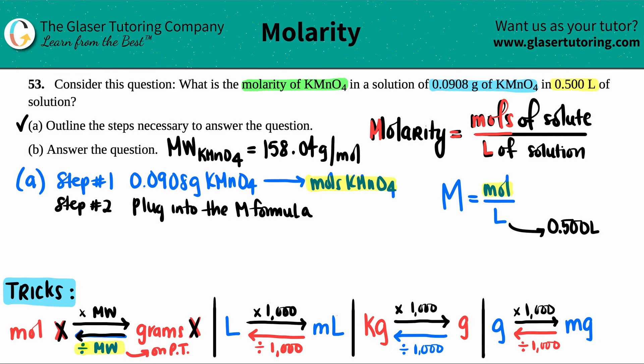So now what did we say? In order to get the moles, I have to take the grams that I have and just divide by the molecular weight. So we'll do letter B over here. Letter B, I take the grams, 0.0908, and I divide by the molar mass, 158.04.